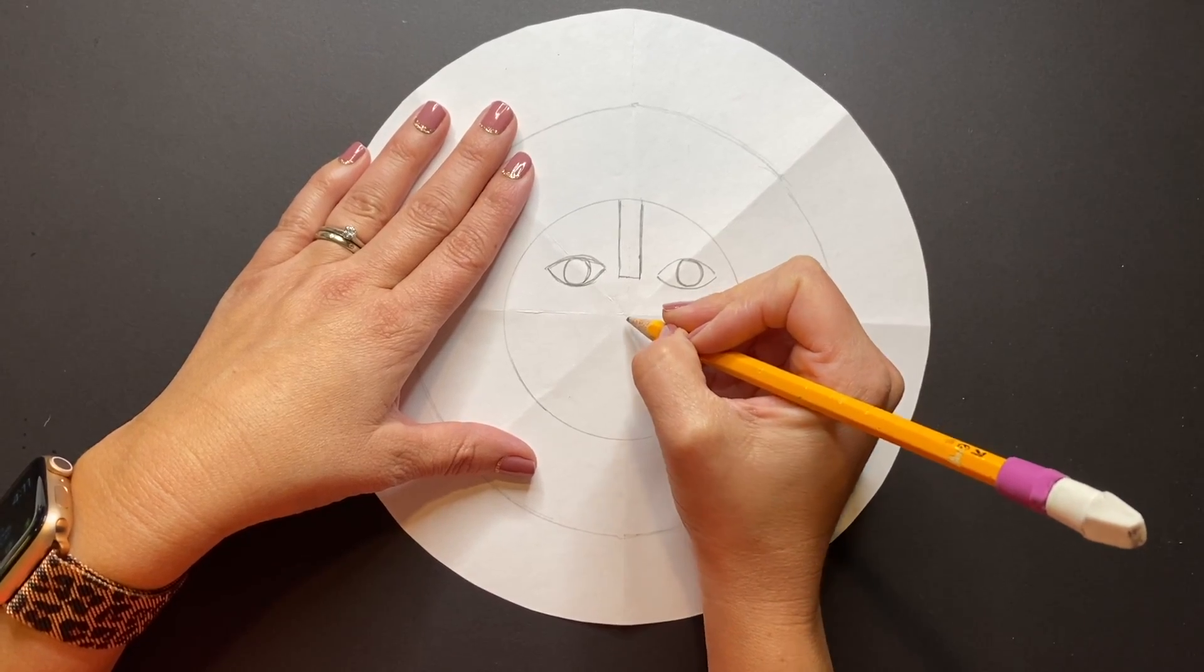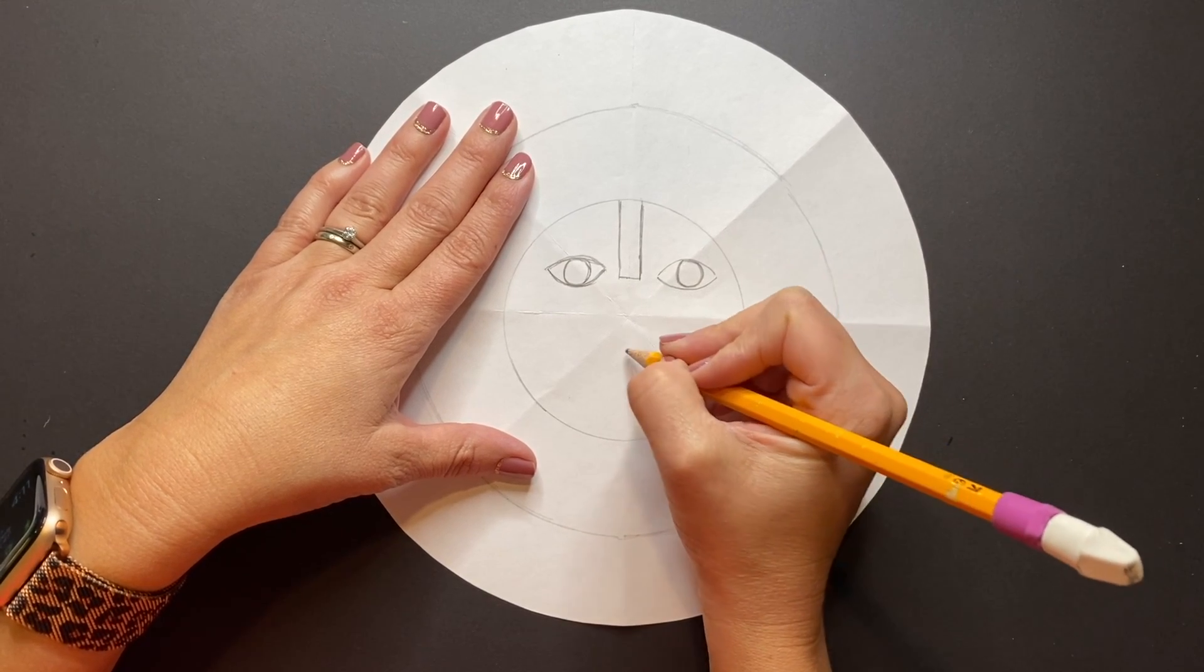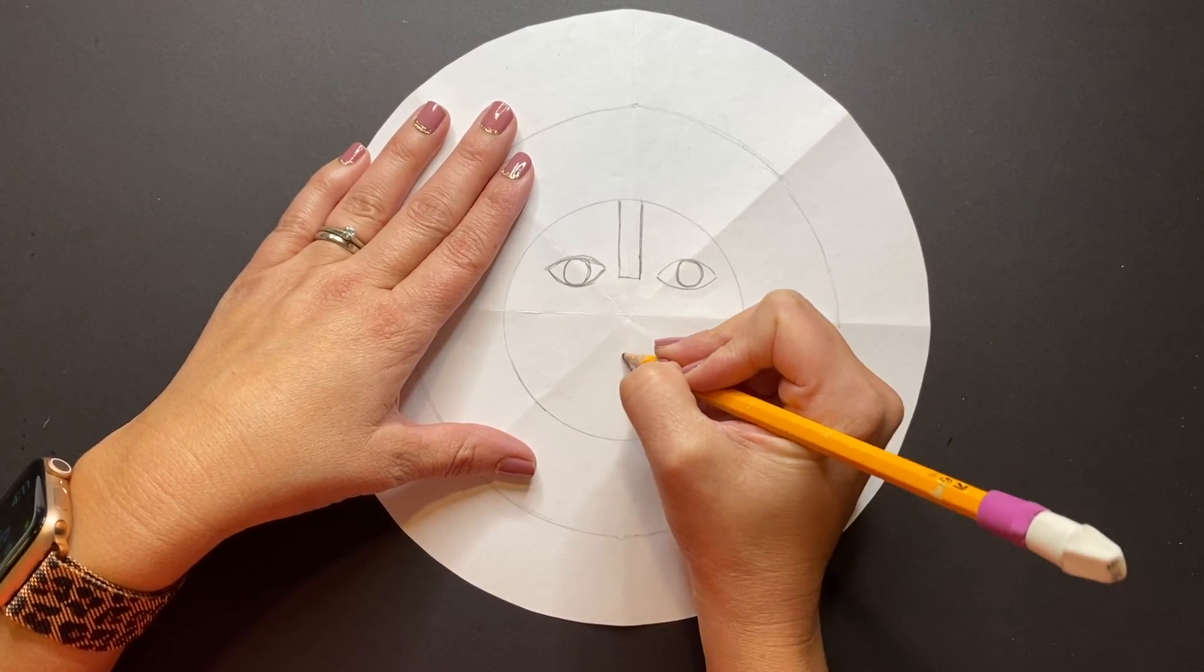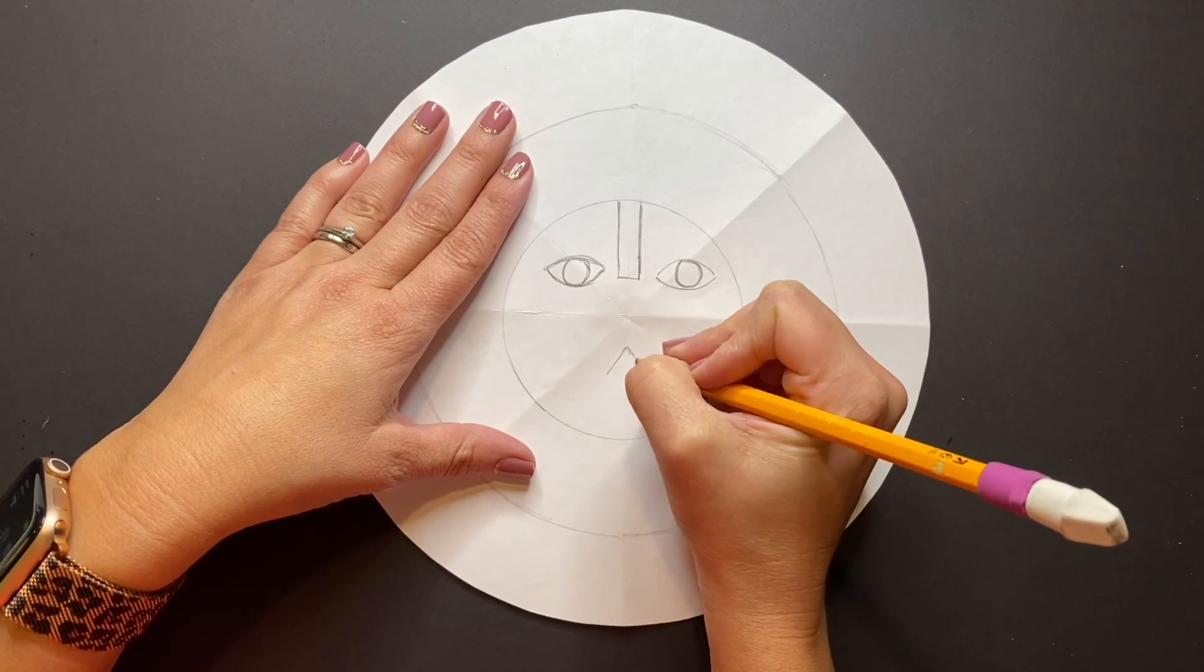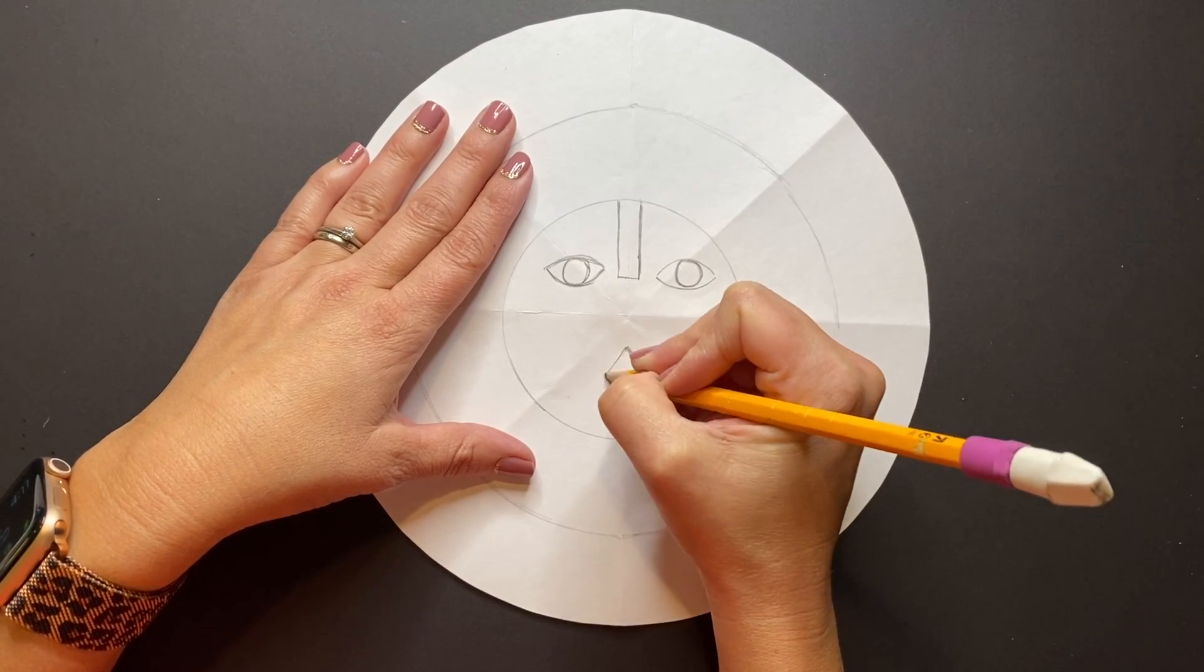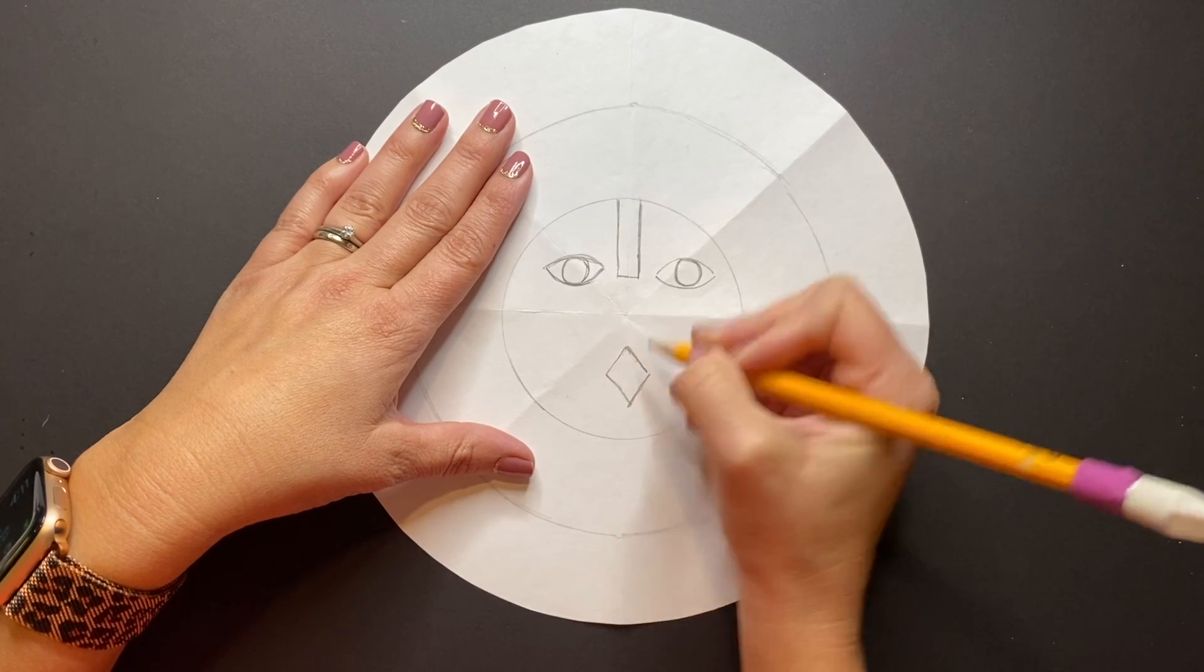Next we're going to create our sun's mouth by creating a diamond-like shape, so a diagonal to the left, diagonal to the right, and then the same on the bottom making them connect.